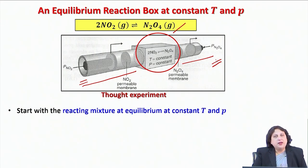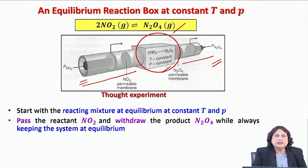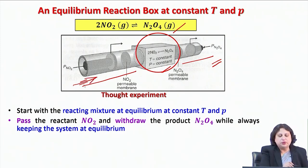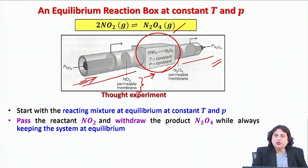In this thought experiment, I will start with the reacting mixture at equilibrium within this box at a constant temperature and pressure. Then I will pass the reactant NO2 from the left-hand side, which is the NO2 side, so that the nitrogen dioxide gas passes through this NO2 permeable membrane and enters the equilibrium reaction box. And I will withdraw the product N2O4 while always keeping the system at equilibrium.